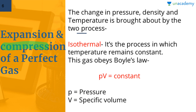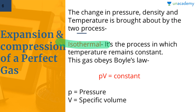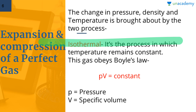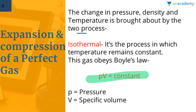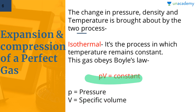Expansion and compression of a perfect gas involves two important processes. The first is the isothermal process, in which the temperature remains constant throughout — there is no variation in temperature. In an isothermal process the gas obeys Boyle's Law: PV = constant, where P is pressure and V is specific volume.